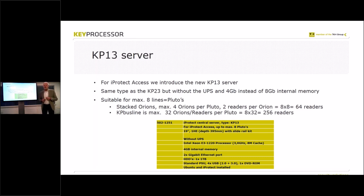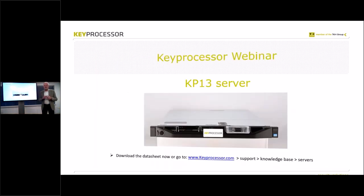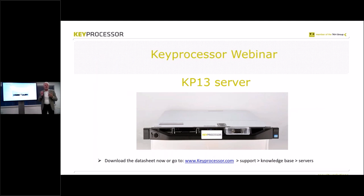So those are the limitations for the KP13 server with iProtect Access: 64 readers in the stacked situation, 256 readers in a bus line situation. You will receive the new price list this week — it's a much better price level than the KP23 server. But it's only for iProtect Access — not Security, not with Sense, not with Commander intercom or intrusion alarm systems. Access only.